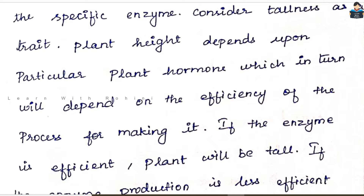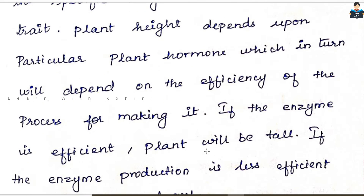If the enzyme is efficient, the plant will be large. The enzymes are proteins in the cells, and DNA is the most important source. So the enzymes are produced efficiently, the hormones are secreted, and the plant is tall.